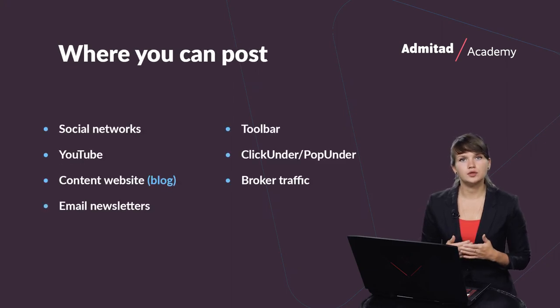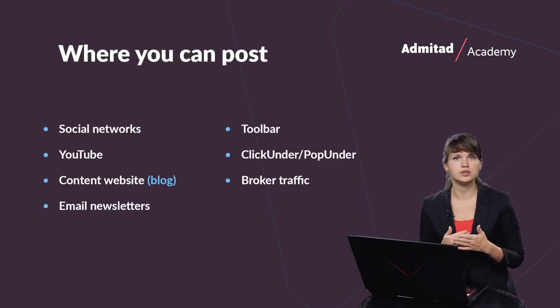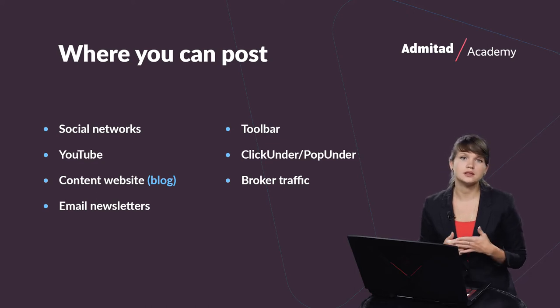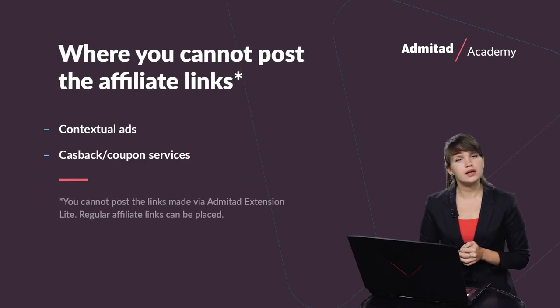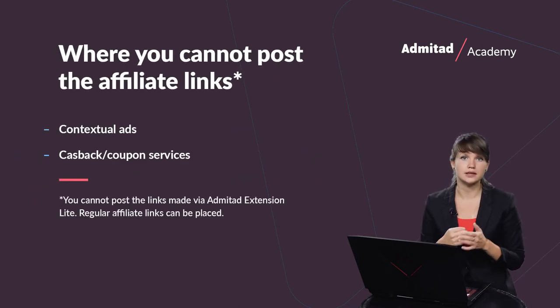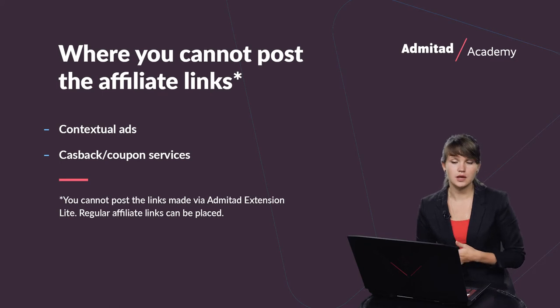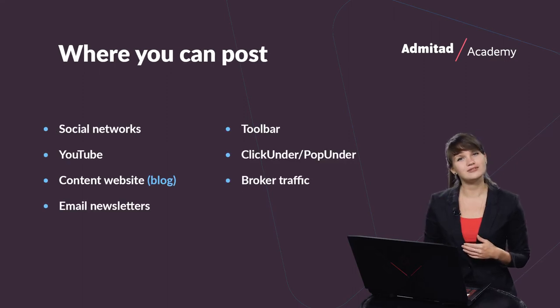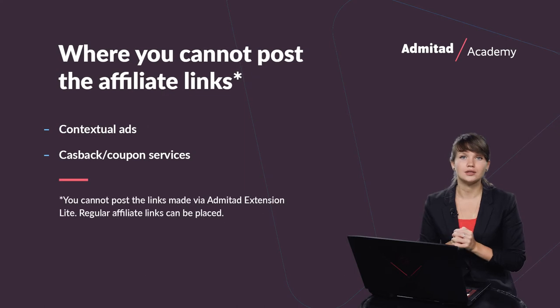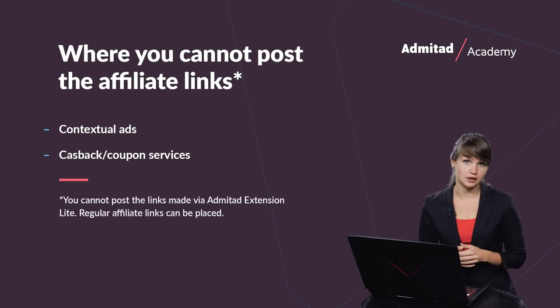There is one important point to keep in mind when working with Admitat extension Lite: you have to place affiliate links only on certain allowed traffic sources. For example, you can place links on social networks or on your YouTube channel, but you can't place them on forbidden sources like contextual ads. You also can't use them if you have cashback or coupon services. This restriction applies only to Admitat extension Lite, so take a look at the allowed sources and remember the forbidden ones.